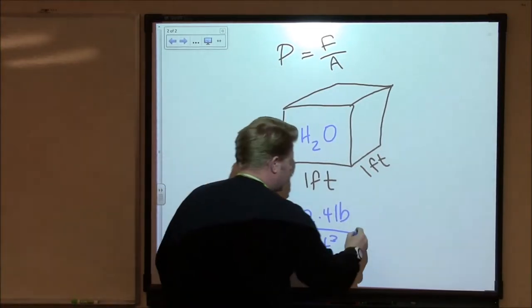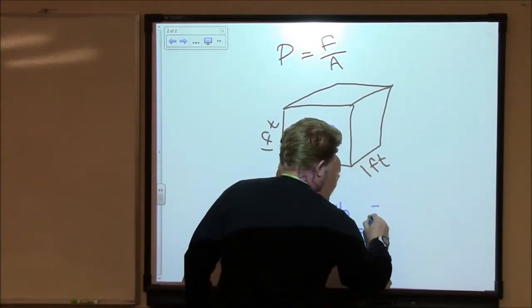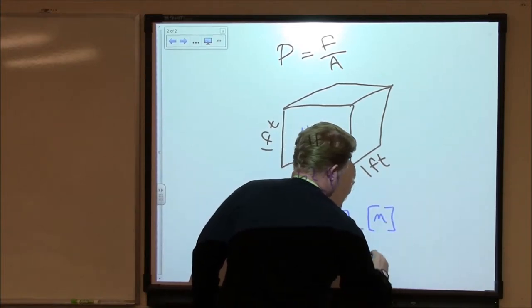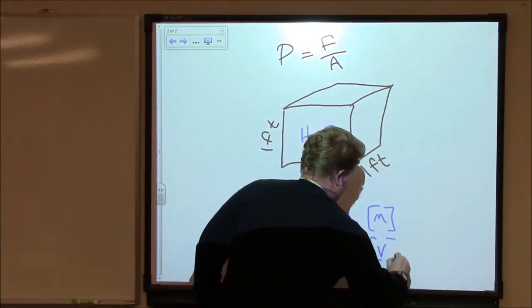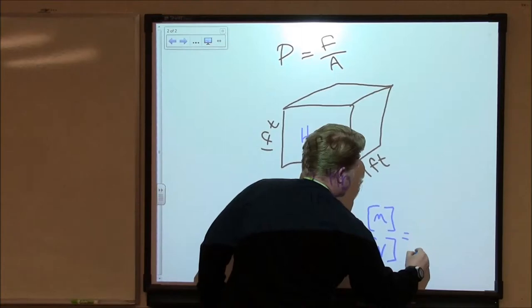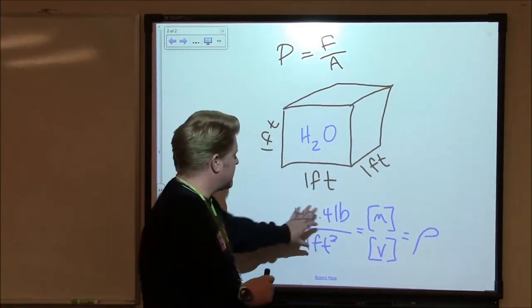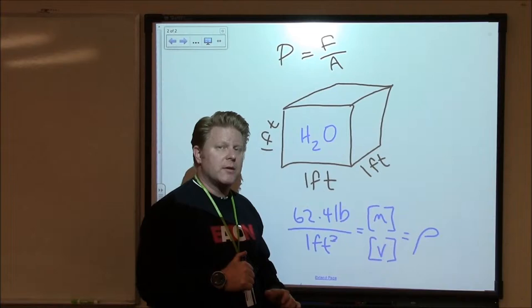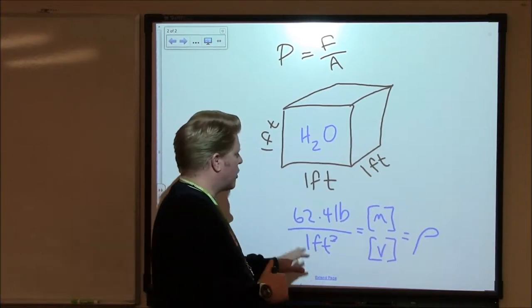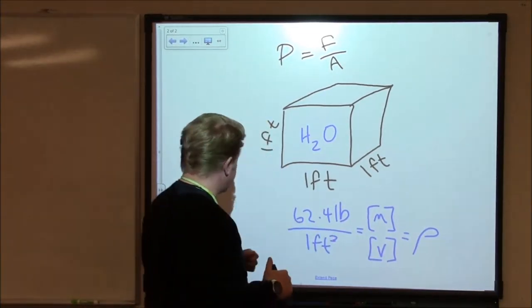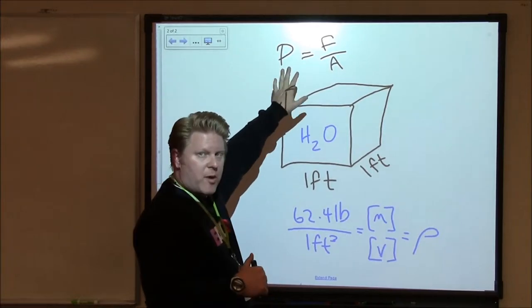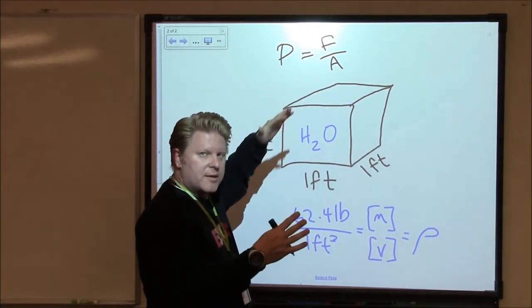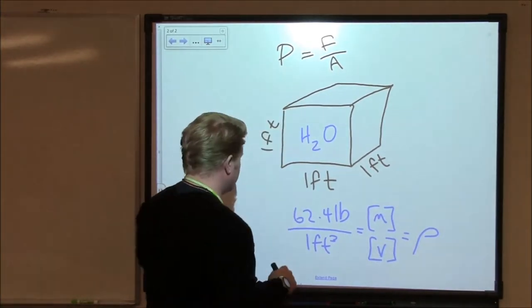This is a volume, so this would be some sort of mass. This would be some sort of volume. That, to me, sounds like a density. So this is a density, 62.4 pounds per cubic foot of water. I think that's a good start if we recognize that that's a density. But don't forget we're talking about pressure, which is a force per unit area. Let's see if we can bring these two together.